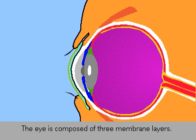The eye is like a camera. It has an envelope that holds a lens and instead of film, a retina that receives the image.